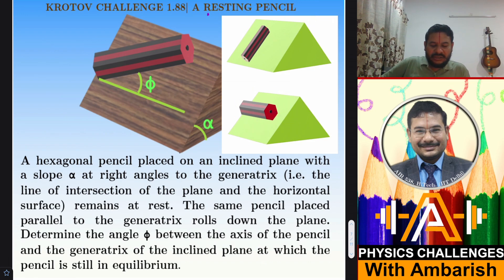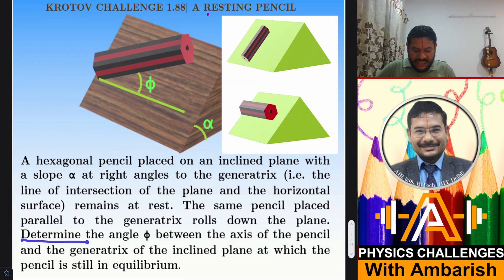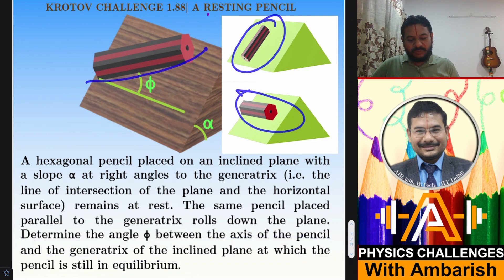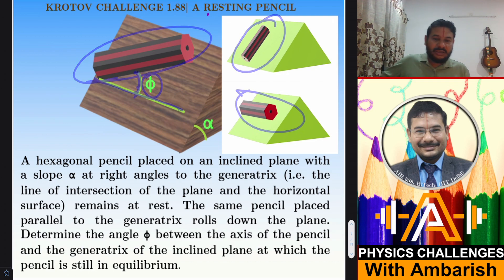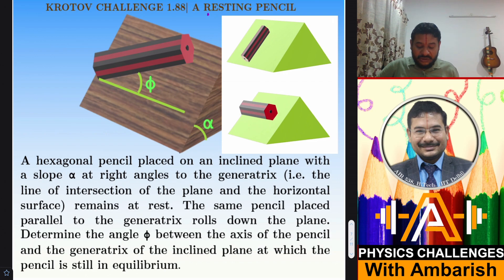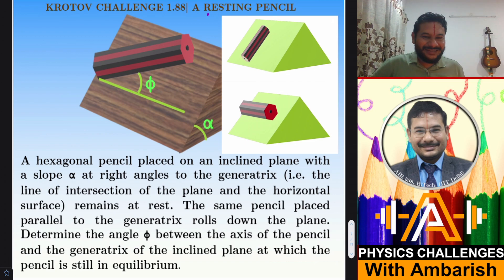We need to determine the angle phi between the axis of the pencil and the generatrix of the inclined plane at which the pencil is still in equilibrium. So if we place the pencil somewhere between these two orientations, what is the condition on phi such that the pencil neither slips nor rolls?